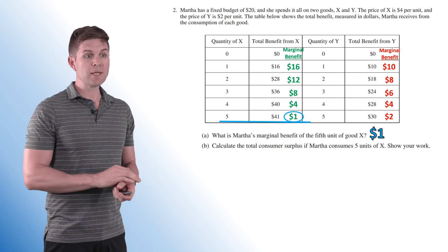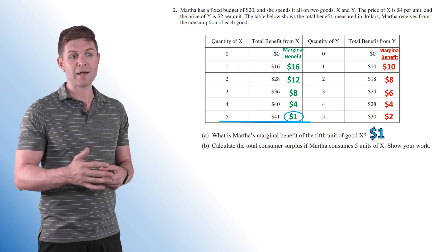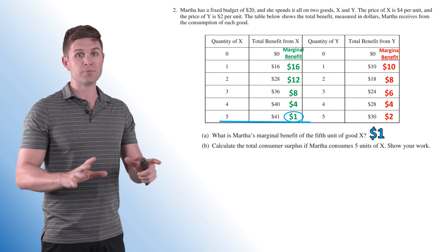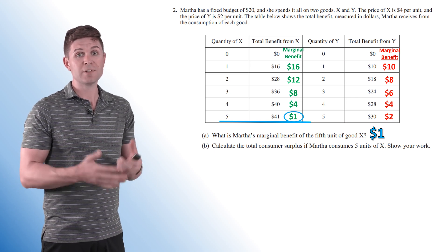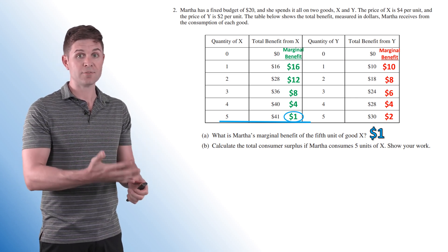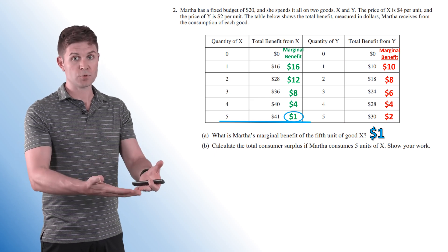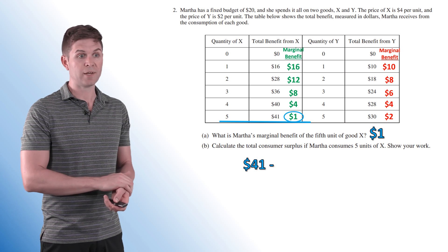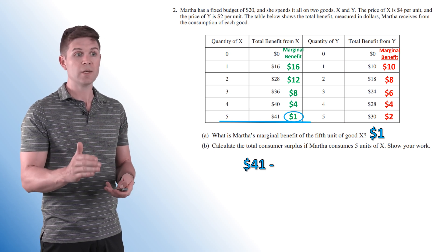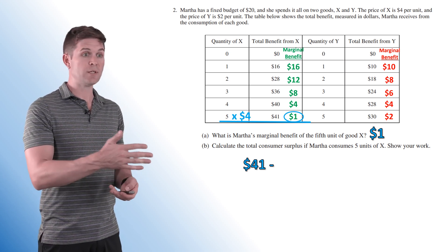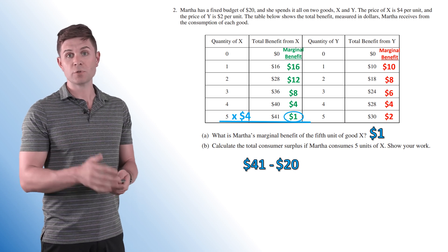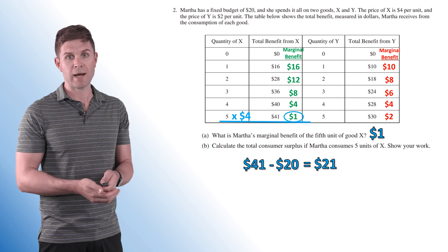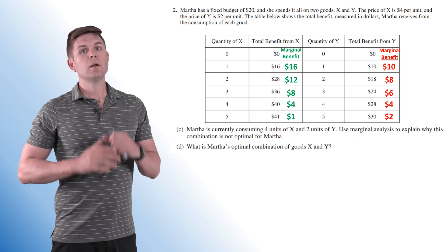Now for part B, calculate the total consumer surplus if Martha consumes five units of good X. Show your work, key part. Now in this case, fairly simple. Consumer surplus is calculated by taking the satisfaction somebody receives from the goods they buy, subtracting the price from it. So in this case, she's getting $41 worth of satisfaction for those five goods. And she only pays $4 a piece for all five of them, so she's only paying $20. So her total consumer surplus in this situation is $21. And we've showed our math.